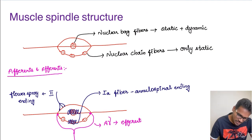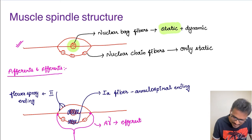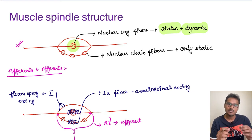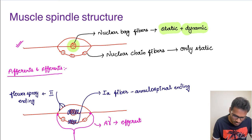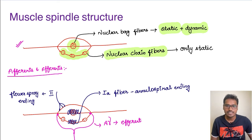Coming to the muscle spindle, its structure has a group of fibers at the center called nuclear bag fibers. The nuclear bag fibers are involved in both static as well as dynamic sensing — they can detect the muscle length at rest (static) and detect movement of the muscle (dynamic). Another group of fibers that look like a chain are called nuclear chain fibers, which are less efficient and detect only the static state of the muscle.